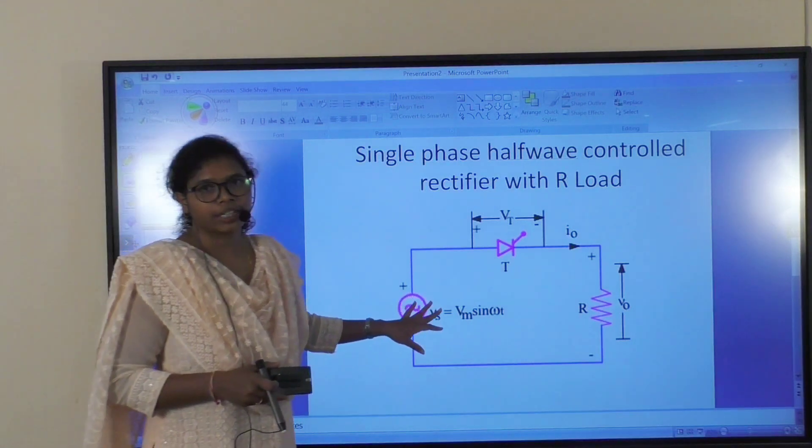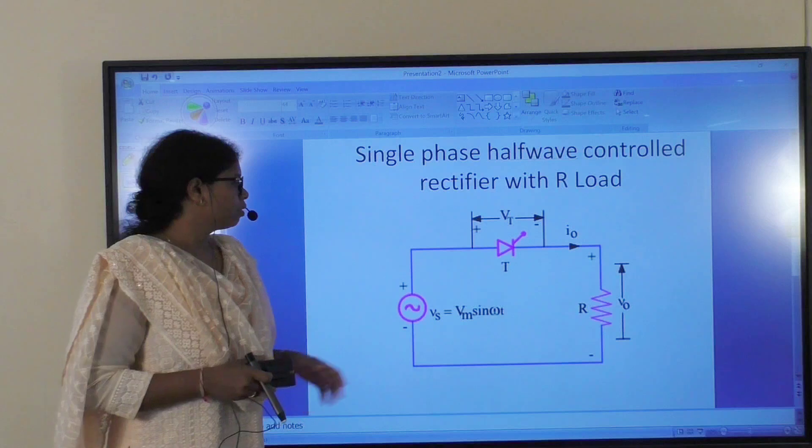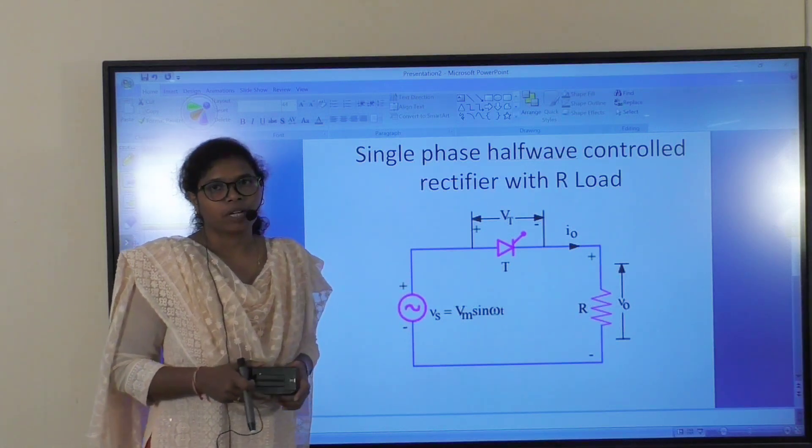Here, this is our circuit. The circuit consists of an AC source, one thyristor, and one resistor.